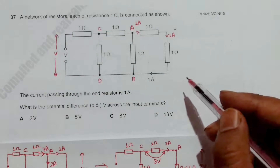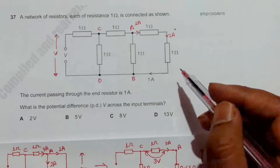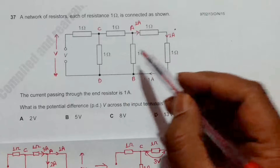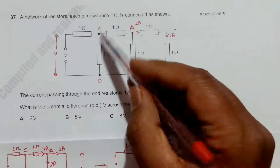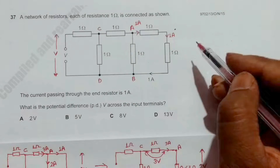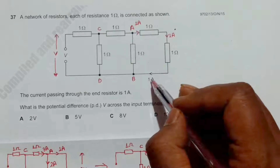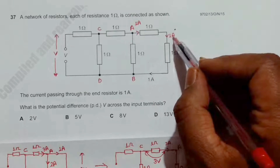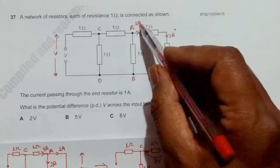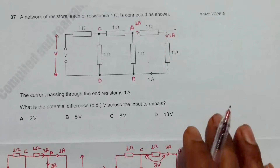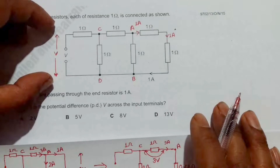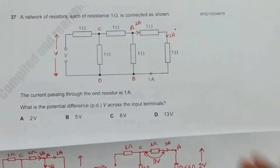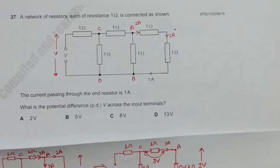Before enlarging the circuit, let me label several junctions: A, B, C, D. Since the current through the end resistor is 1 ampere, it should be 1 ampere here, and 1 ampere here as well. We need to find the PD across the input terminals.